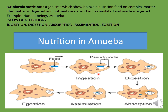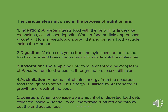Holozoic nutrition in amoeba means the food is ingested using pseudopodia. When the pseudopodia merge, they form a food vacuole around the food particle. This food vacuole releases enzymes which help in the digestion of food. After digestion, there is absorption of the digested food by the process of diffusion into the body of amoeba. Then the size of amoeba increases, meaning the digested food is assimilated after absorption. The waste which is not digested is released out of the body. So in amoeba nutrition: ingestion, digestion, absorption, assimilation, and egestion all take place.